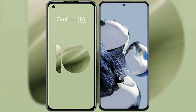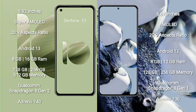I will compare the new Asus Zenfone 10 with Xiaomi 12T Pro. The Asus Zenfone 10 comes with a 5.92-inch Super AMOLED display and a screen-to-body ratio of 26.9. The Xiaomi 12T Pro comes with a 6.67-inch AMOLED display and a screen-to-body ratio of 26.9.